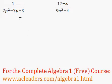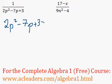Okay, let's continue to work on restricted values. Over here we know that 2p squared minus 7p plus 3 cannot equal 0.